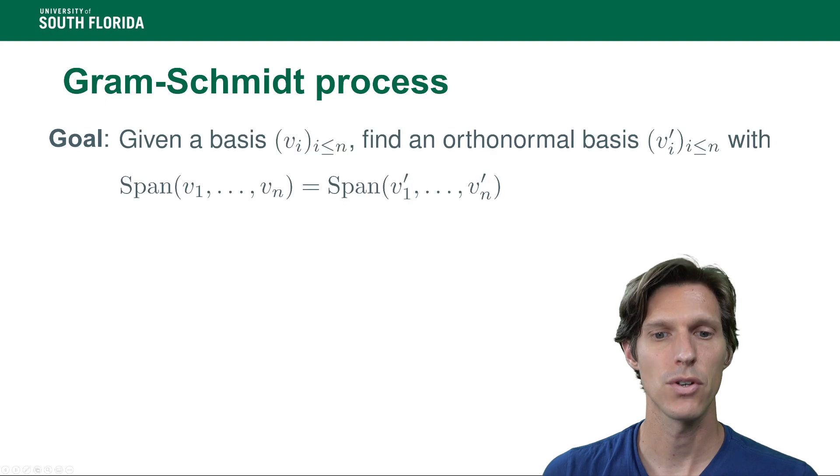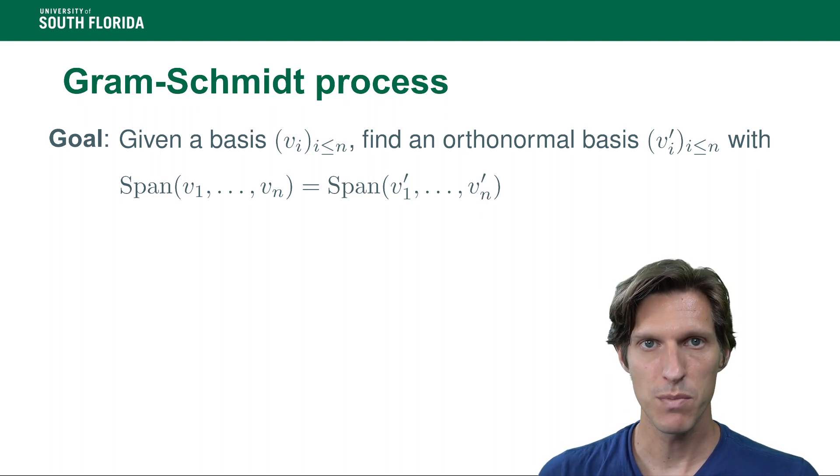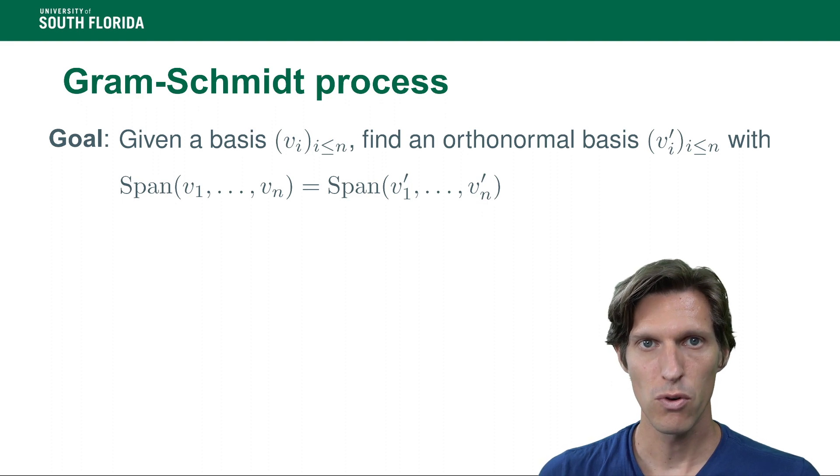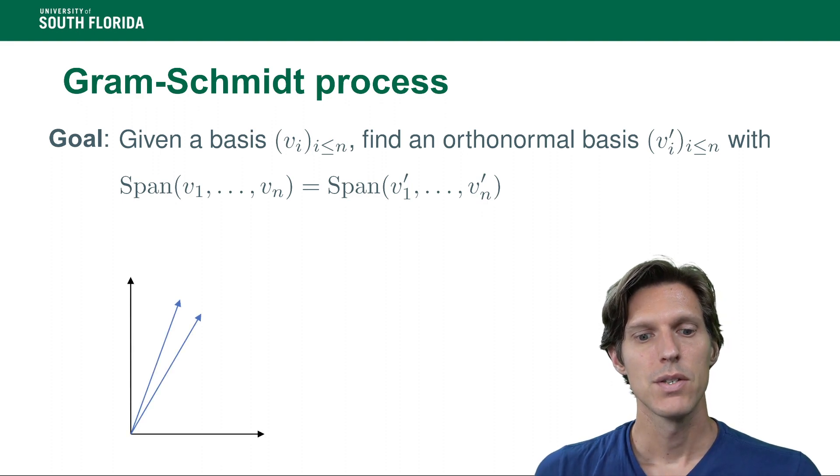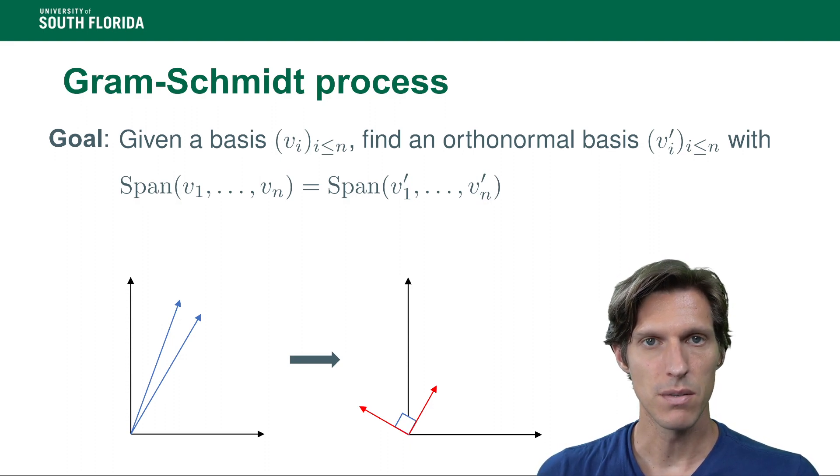Now let's get to the Gram-Schmidt process. As I said before, given a basis of a vector space, the goal of the Gram-Schmidt orthogonalization process is to find another basis of that same vector space that has the property of being orthonormal. This is a visual interpretation in dimension 2. We want to turn our basis into an orthonormal one.